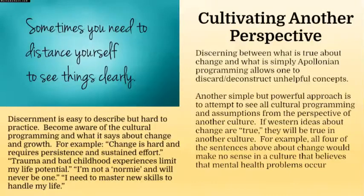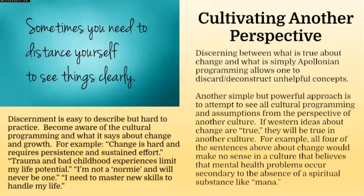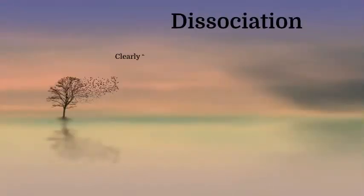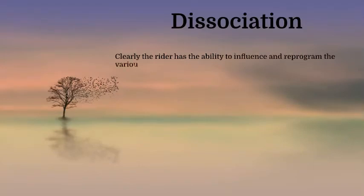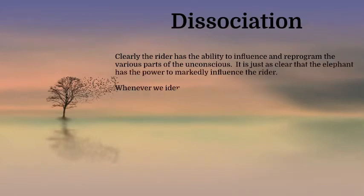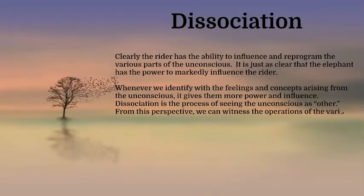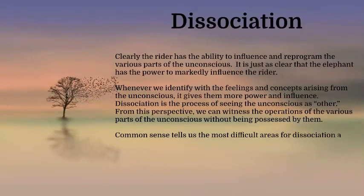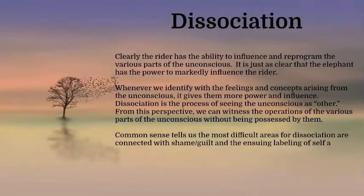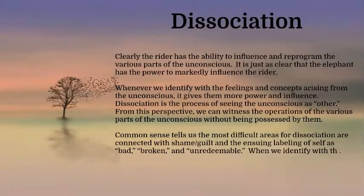Dissociation. Clearly, the rider has the ability to influence and reprogram the various parts of the unconscious. It is just as clear that the elephant has the power to markedly influence the rider. Whenever we identify with the feelings and concepts arising from the unconscious, it gives them more power and influence. Dissociation is the process of seeing the unconscious as other. From this perspective, we can witness the operations of the various parts of the unconscious without being possessed by them. The most difficult areas for dissociation are connected with shame and guilt and the ensuing label of self as bad, broken, and unredeemable. When we identify with these feelings and messages from the unconscious, the conscious mind becomes so confused it no longer functions as a platform for change — instead, the conscious mind becomes part of the problem, not part of the solution.